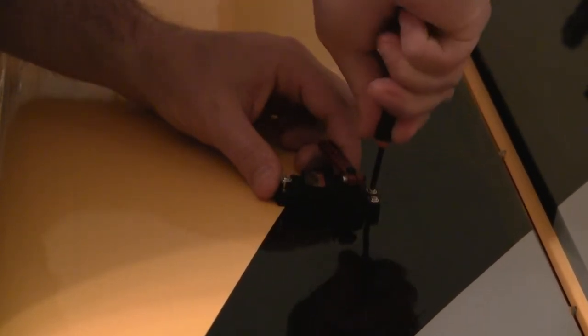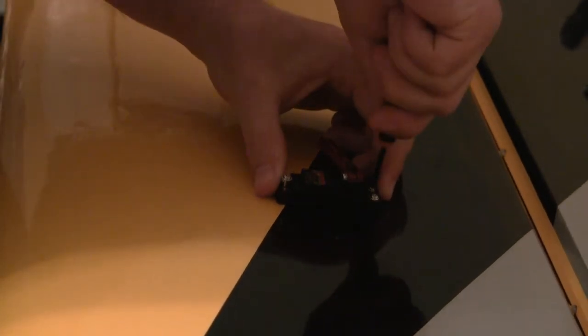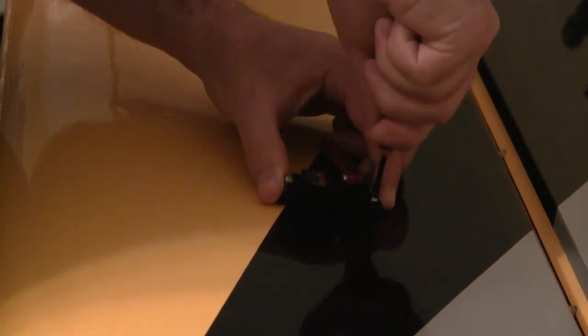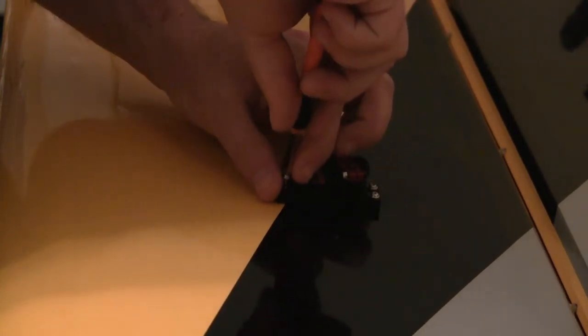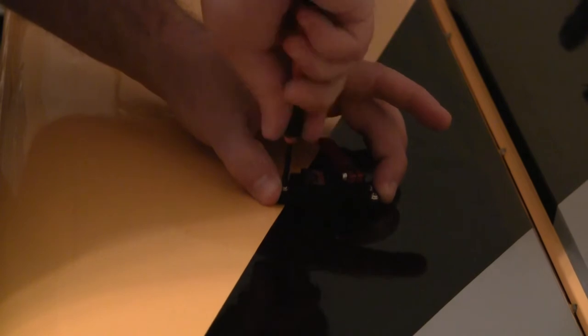And I'll usually tighten them up until the grommet starts to spin, and then I'll back it off just a little bit. Don't want to get them too tight because that reduces the effectiveness of the rubber grommet.